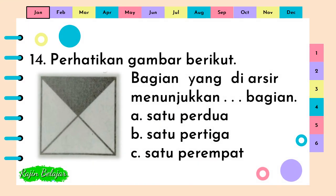Perhatikan gambar berikut. Bagian yang diarsir menunjukkan titik-titik-titik bagian. A. Satu per dua. B. Satu per tiga. C. Satu per empat. Jawaban yang benar adalah C. Satu per empat.